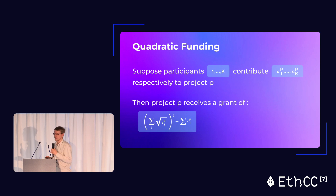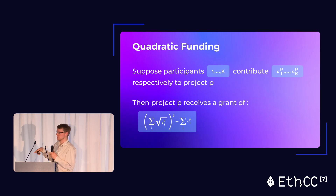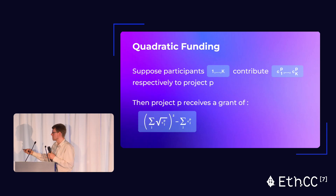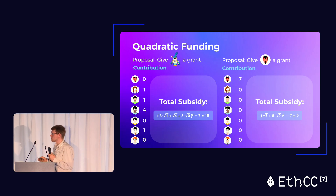Recall quadratic funding. The idea is that you have some kind of public good funding program. People are making contributions to some project. You have a bunch of participants; they each contribute some amount of money to some project P, and then you give a grant from a matching fund. The basic idea is that if you have a bunch of small contributors to a project, they should receive more of a subsidy under this mechanism than if you just have a couple of big contributors.